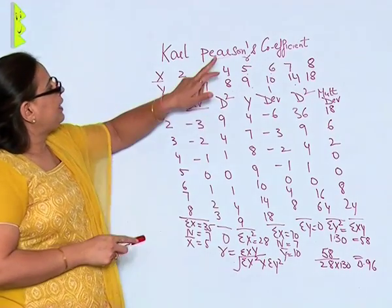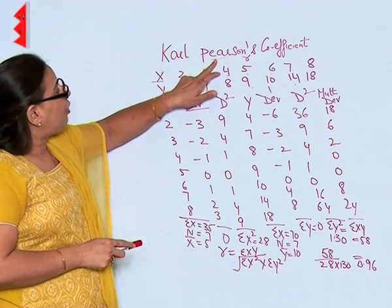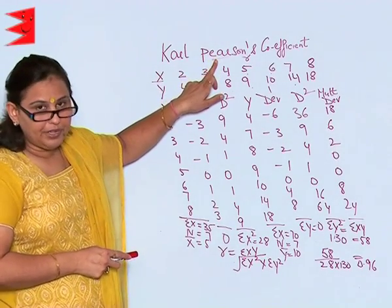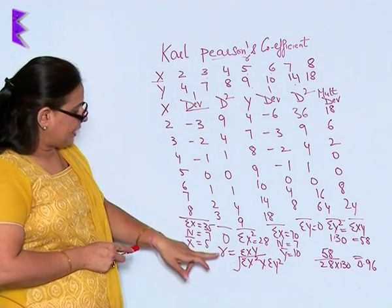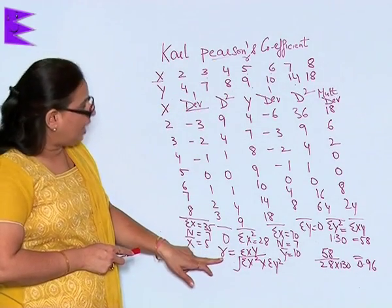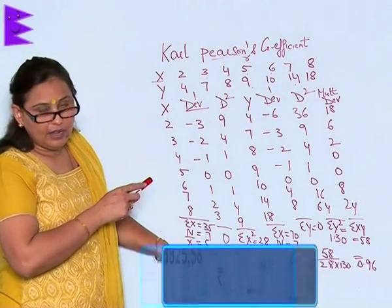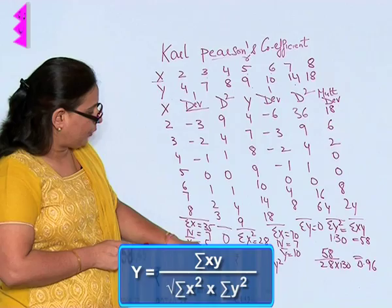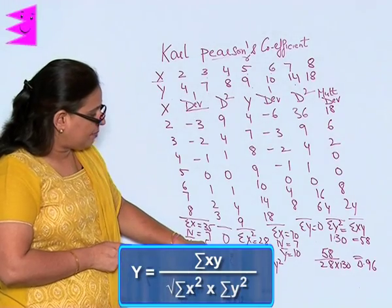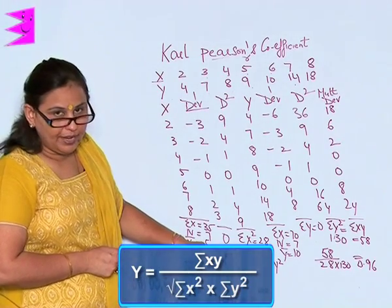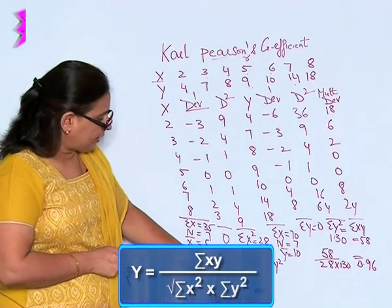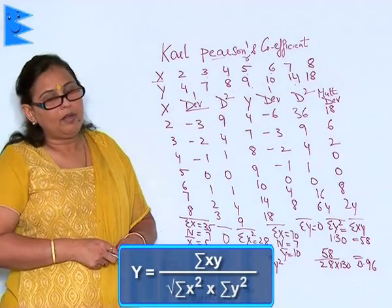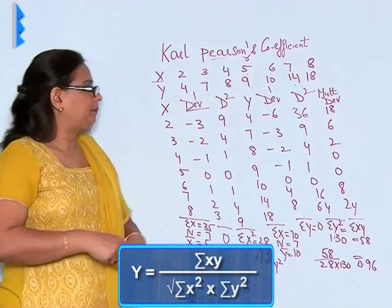The formula that we have for Karl Pearson's coefficient is: r (Karl Pearson) = sigma xy upon the square root of sigma x squared into sigma y squared.